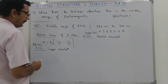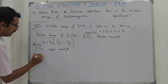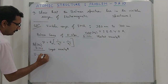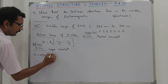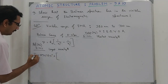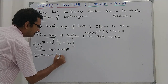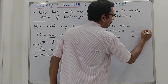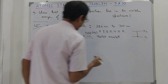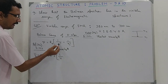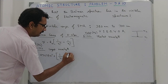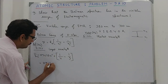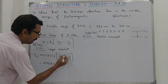Starting with the 3→2 transition: ν̄ = RH × (1/n₁² − 1/n₂²). The Rydberg constant for H atom is 109678 cm⁻¹. For n₁=2, n₂=3: this gives 1/4 − 1/9 = (9−4)/36 = 5/36. Since ν̄ = 1/λ, we get λ = 36/(5 × 109678), which gives us the value in centimeters.